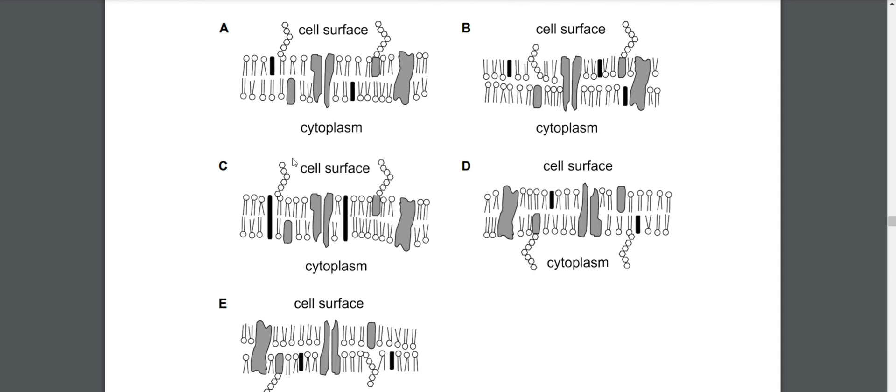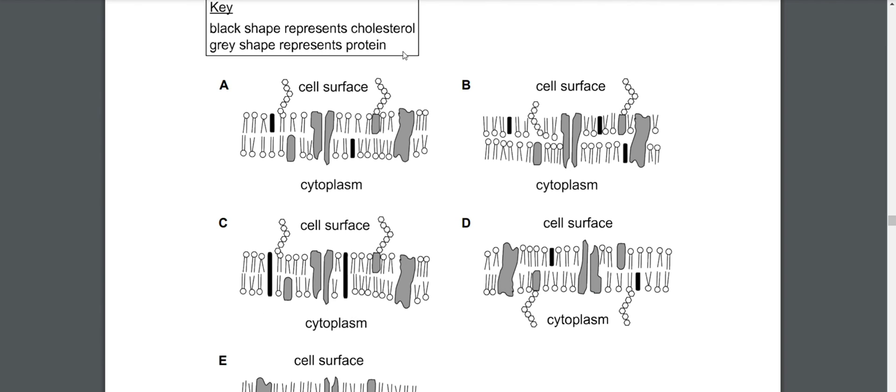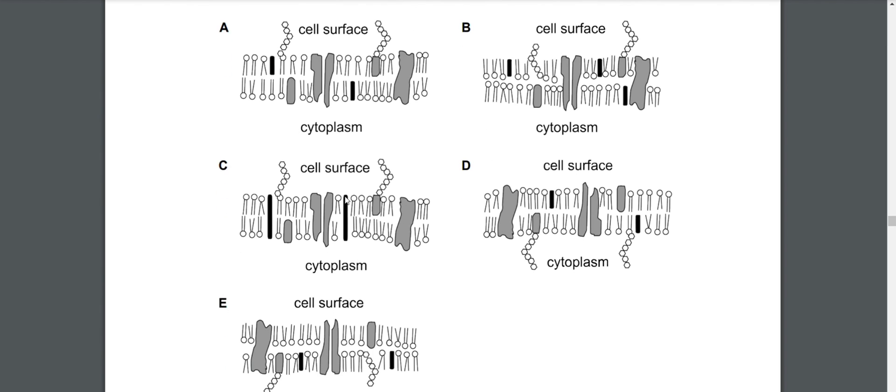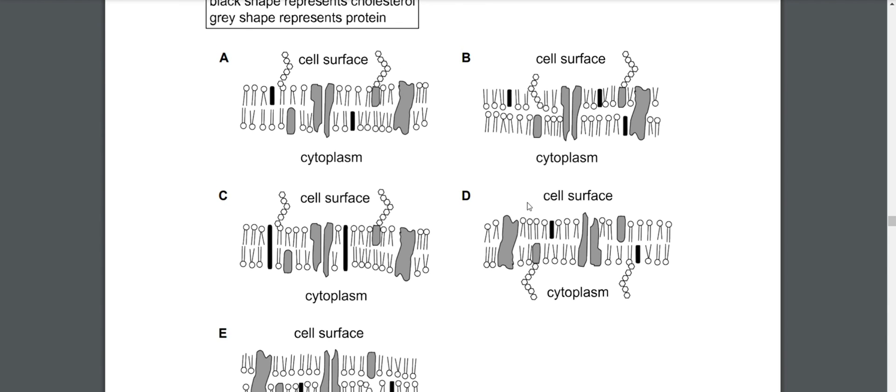About C - everybody knows that cholesterol, because the question says that the black shape represents cholesterol and the gray shape represents protein, everybody knows that cholesterol is not the length of two phospholipids, it's just the length of one phospholipid, so we eliminate C. You should look at cell membrane images so you can familiarize yourself with the cell membrane - it's very easy, I'm sure almost everybody knows this information. Now we are left with A and D.